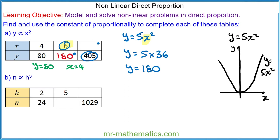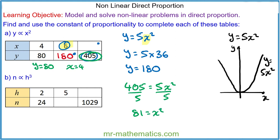When y is equal to 405, we have 405 is equal to 5x squared. We can divide both sides by 5, so 81 is equal to x squared. We can take the square root of both sides, so the x value will be 9.